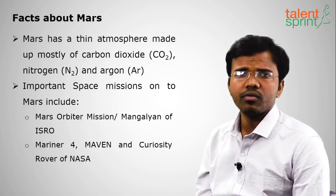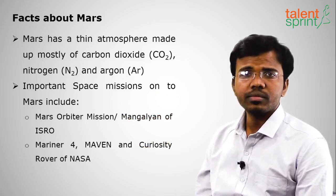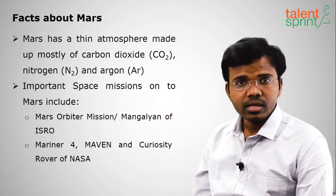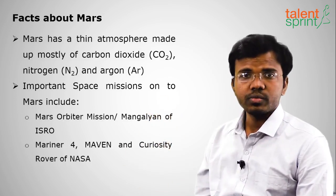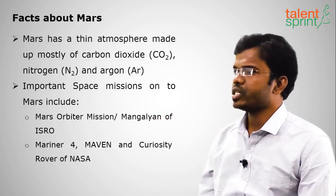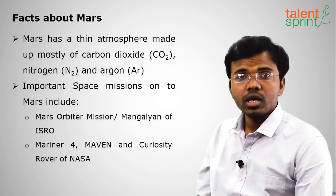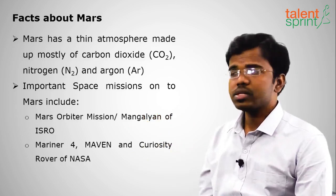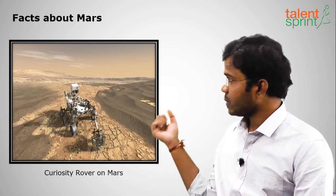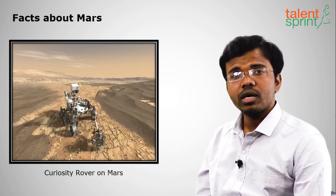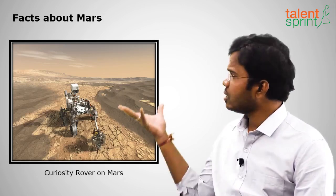India's space mission Mangalyaan — the Mars Orbiter Mission — successfully reached Mars on its first attempt, with a budget less than that of Hollywood movies, as mentioned by the honorable Prime Minister. Other Mars missions include Mariner 4 and MAVEN. NASA's Curiosity Rover was sent to Mars to collect samples. Mars is called the Red Planet due to its iron content on the surface.